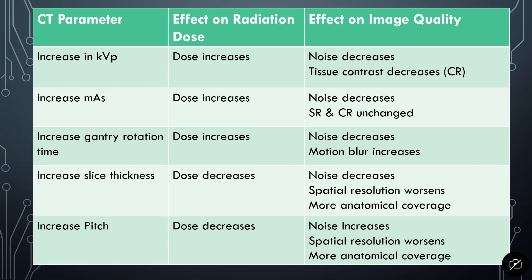The more x-rays hitting the detectors, the less influence noise has on the image. If you increase the KVP, you've increased the energy, so more of those x-rays will pass through patient tissue and hit the detector, giving you more information per slice. With tissue contrast, that will decrease a little bit because the x-rays have more penetration power and more ability to pass through tissue without interacting with it, so the ability to differentiate contrast is not going to be as good.